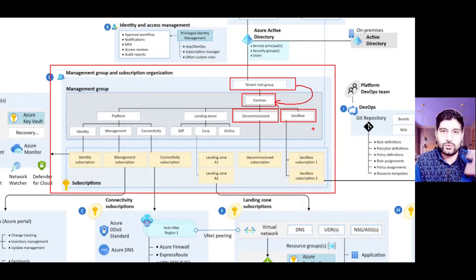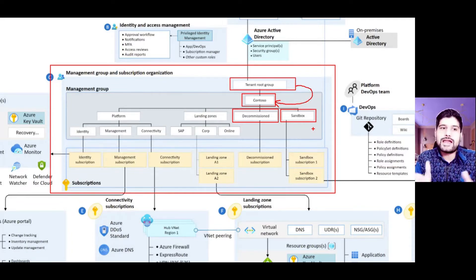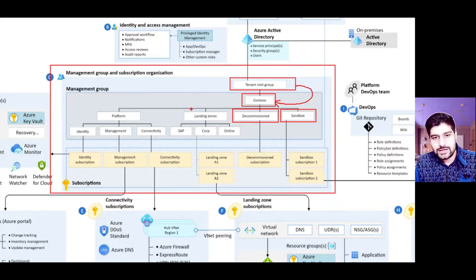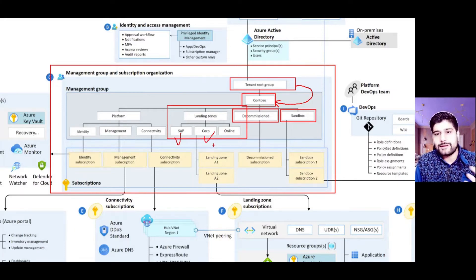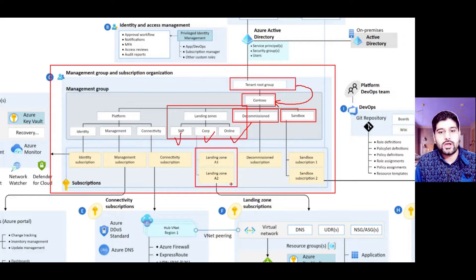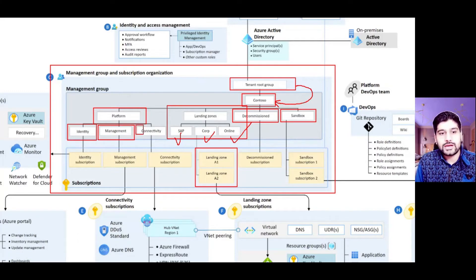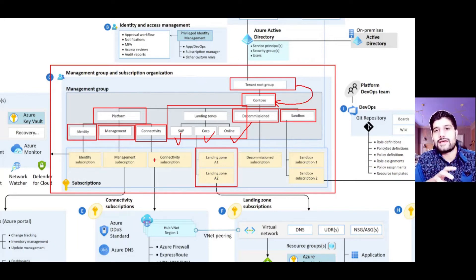For example, for the marketing department you may have folks in the US, India, and Australia and you want to create different management groups for each of those locations. Your management group structure is dependent on how your company will manage these resources. You also create management groups for your landing zones — for SAP, corporate applications, or online applications — with subscriptions inside those management groups where workloads will actually be deployed. You also create platform-related management groups to manage identity, management of workloads, and connectivity through networking.